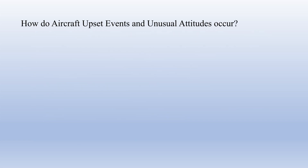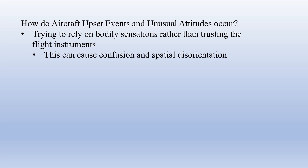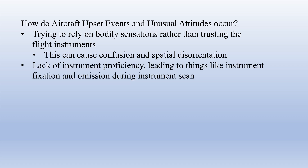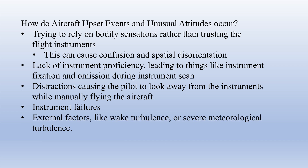There are several ways a pilot can unintentionally get themselves into an unusual attitude or aircraft upset event. Trying to rely on bodily sensations rather than trusting your instruments is probably the number one culprit. This can cause confusion and spatial disorientation, which can in turn lead you to not trust what you're seeing on your instruments. Lack of instrument proficiency and doing things like fixating or omitting during your instrument scan can also cause an upset. Distractions can often cause you to look away from your instruments, sometimes for a prolonged period of time, and be surprised by what you see when you look back at them. Upsets can also be caused by things like instrument failures, which we'll discuss in the next lesson, and by external events such as a wake turbulence encounter or severe meteorological turbulence.